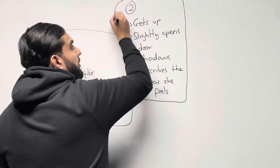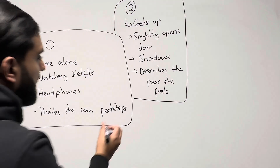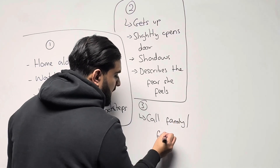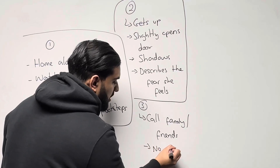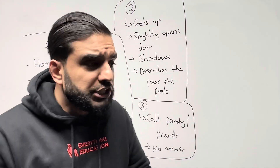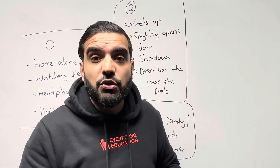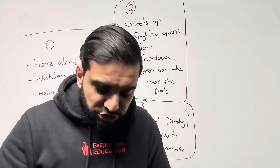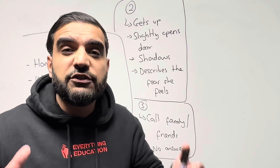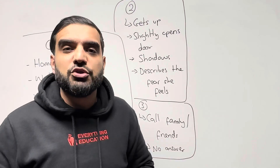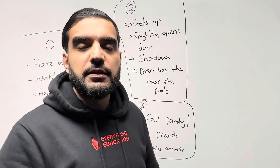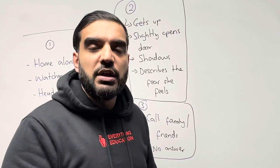Paragraph three: after feeling immense fear, she calls family and she calls friends — no answer. Add more detail here: she puts away her headphones and iPad, fumbles around the room looking for her phone, eventually finds it with 10% battery. She dials dad — voicemail. Rings mum — voicemail. Rings her friend — nobody is answering. All this time her fear is building, but by the end of paragraph three she makes an important decision: she must protect her family. She's not going to hide.